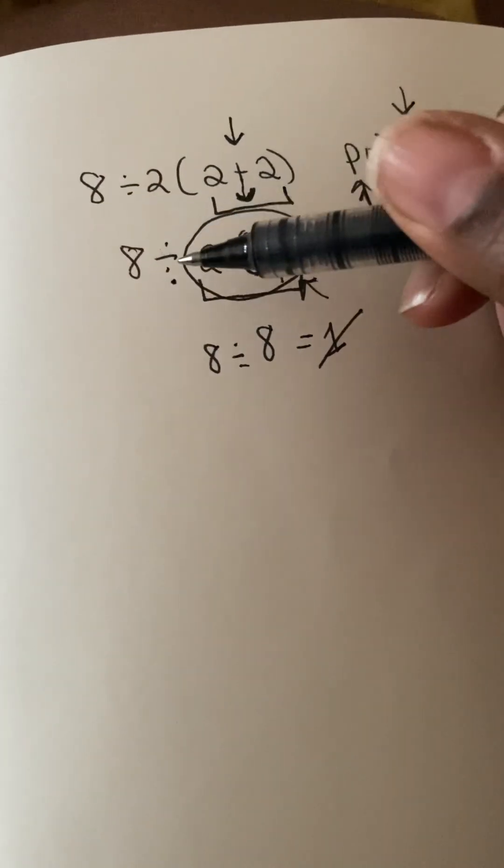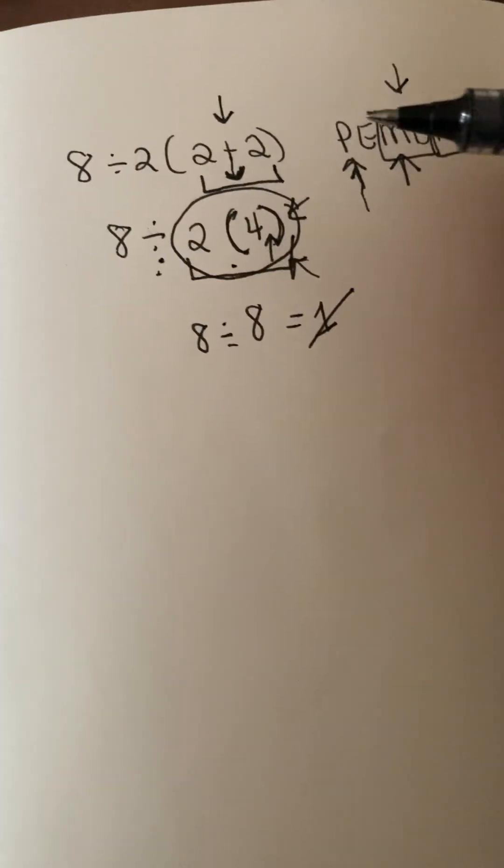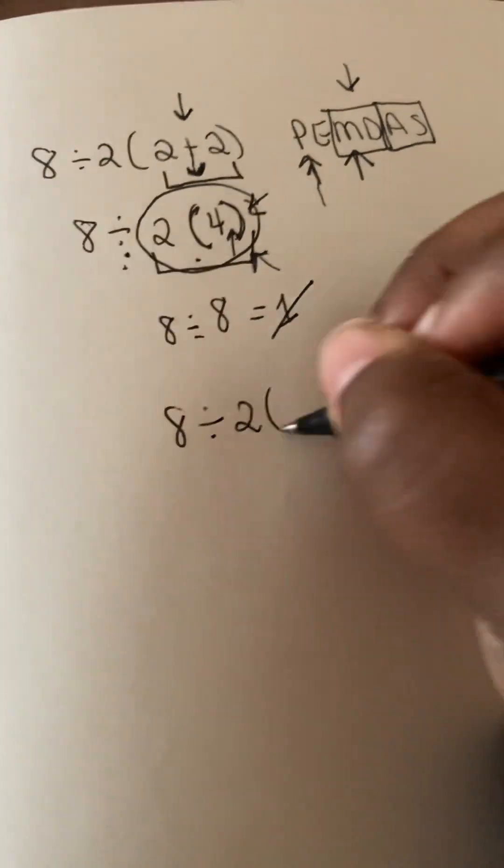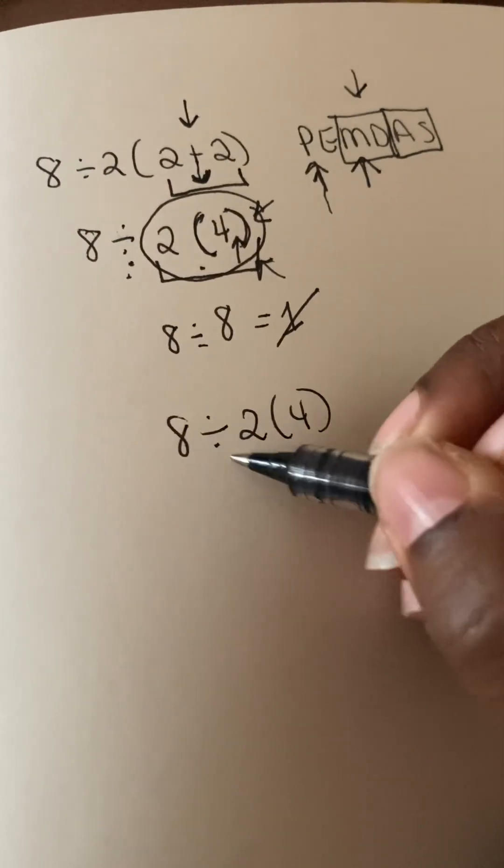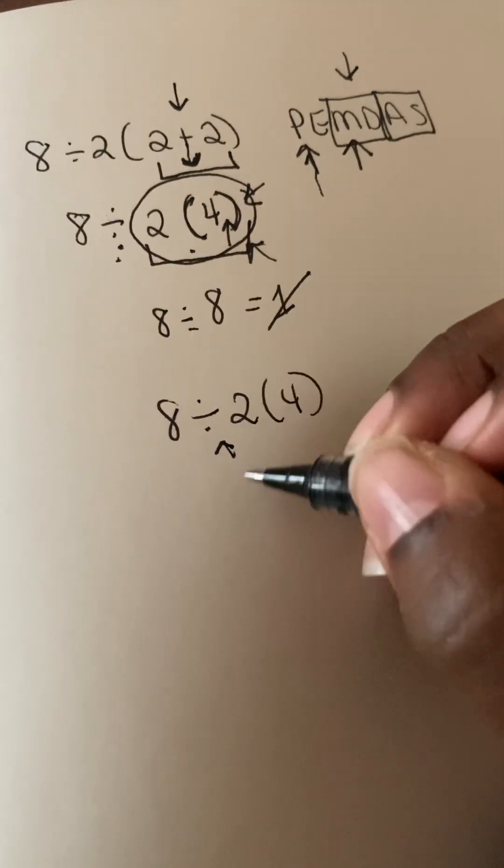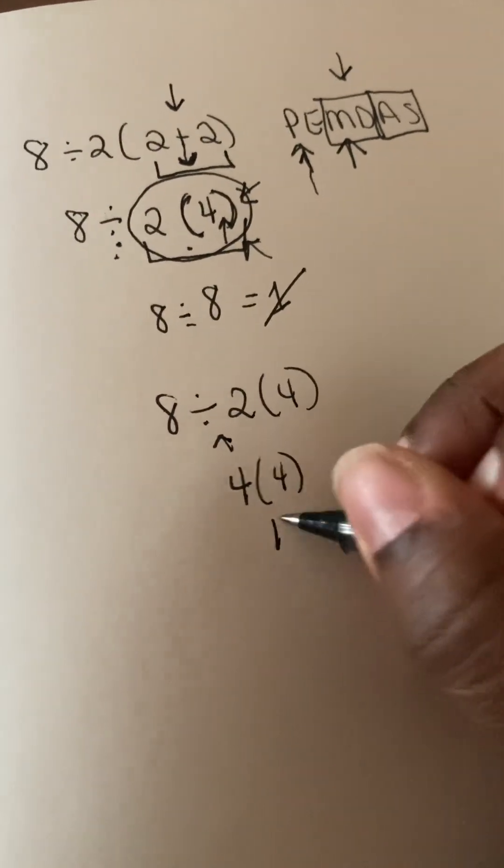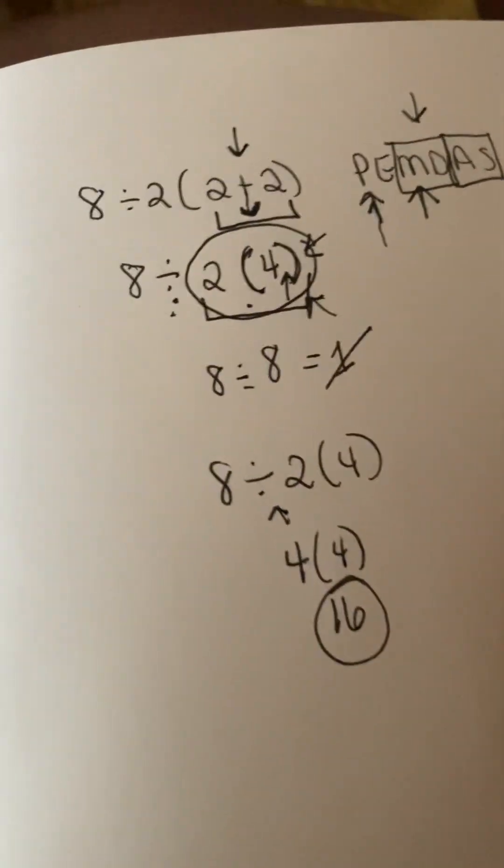So let's go back to that second step. Because division comes first, you would do 8 divided by 2, which is 4, and then 4 times 4, which is 16. And the answer will be 16.